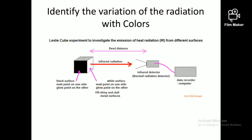We ensure the water temperature is the same for each trial — for example, 100°C for white, then 100°C for black, and so on. We measure the infrared detector readings for different colors: white, black, light gray, dark gray, etc. The results show that the highest infrared radiation occurs from the black side, then dark gray, then light gray, and the least from the white side. This confirms that dark colors emit thermal radiation more effectively than light colors.